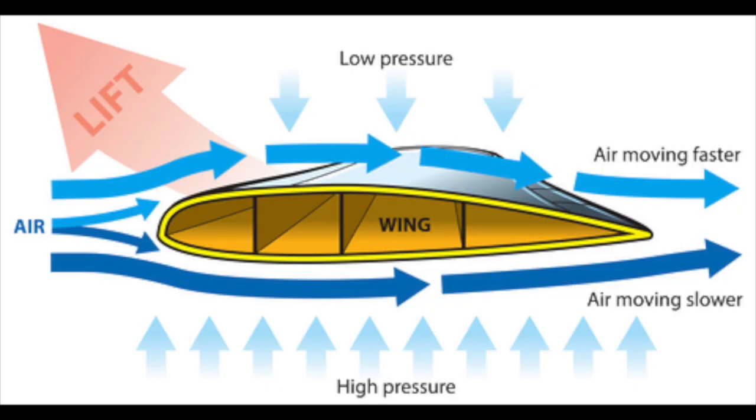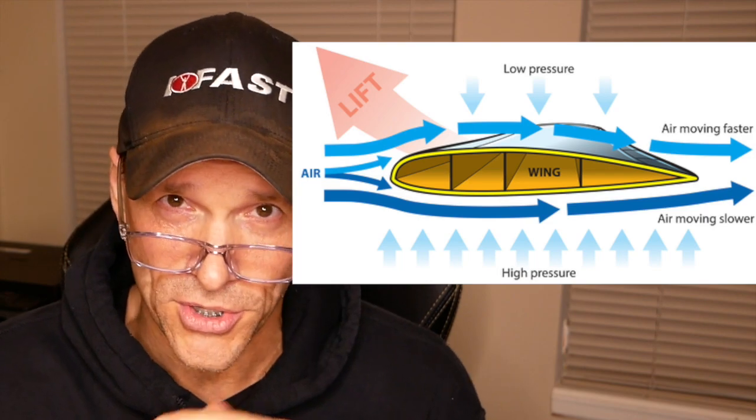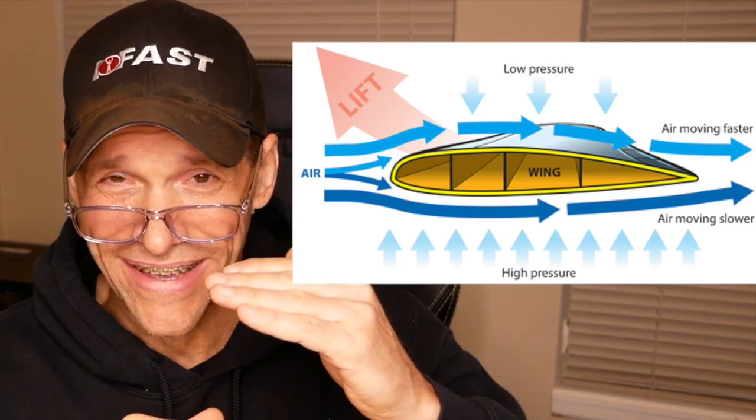If we break this down, there was one telling representation in the foot that sort of gives it away as to what's really going on. Let's talk a little bit about airplane wing physics. The way an airplane wing works is as the air passes over the wing, it creates a low pressure above the wing and a high pressure below the wing — and that's what creates lift.